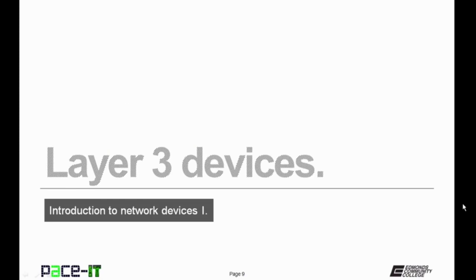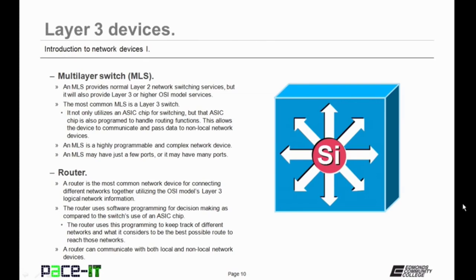Now let's move on to Layer 3 devices. First up is the multi-layer switch. A multi-layer switch provides normal Layer 2 network switching services, but it will also provide Layer 3 or higher OSI model services. The most common multi-layer switch is a Layer 3 switch. It utilizes an ASIC chip for switching, and that chip is also programmed to handle routing functions, allowing the device to communicate and pass data to non-local network devices. Multi-layer switches are highly programmable and not very common in small office/home office networks because they're really expensive — you're more likely to find them in an enterprise LAN.